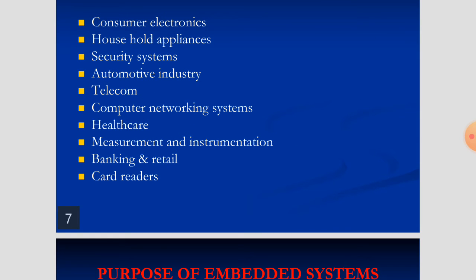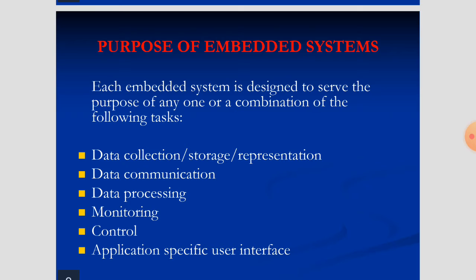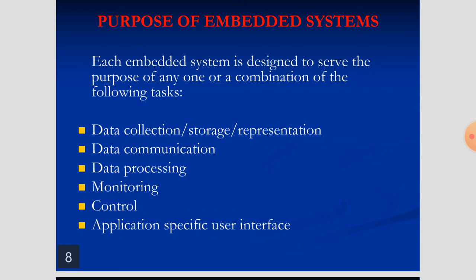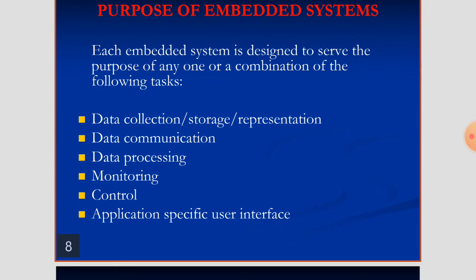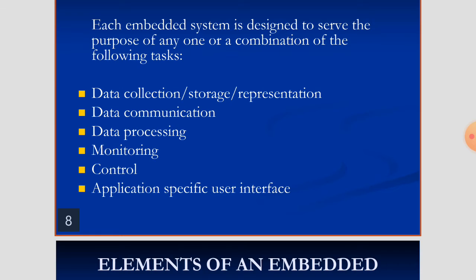The main purpose of embedded systems is to give services as per user requirements by considering specific parameters or tasks. The main purposes are: data collection, storage, and representation; data communication; data processing; monitoring; control; and application-specific user interface. These points are very necessary before designing any embedded system.